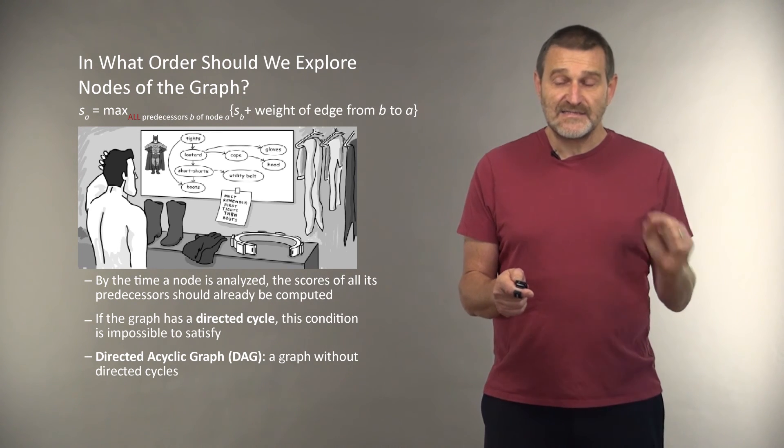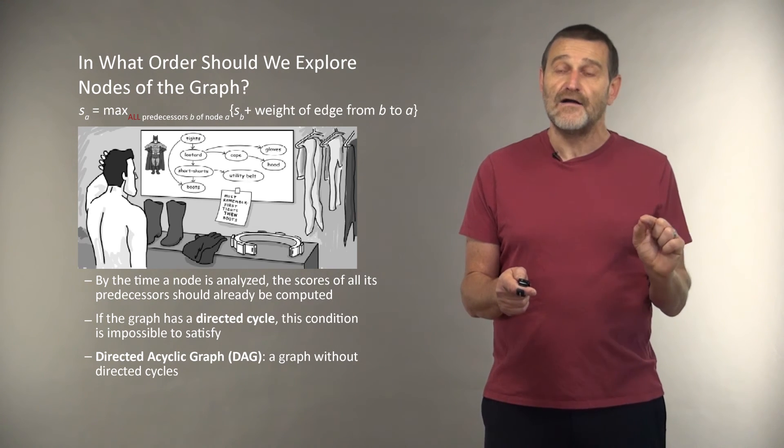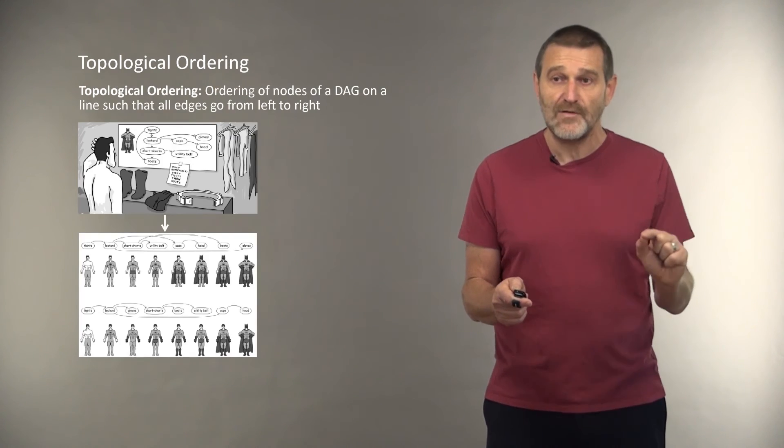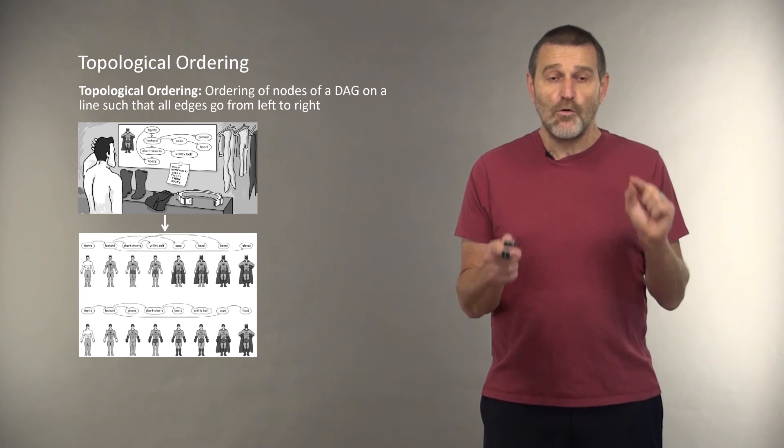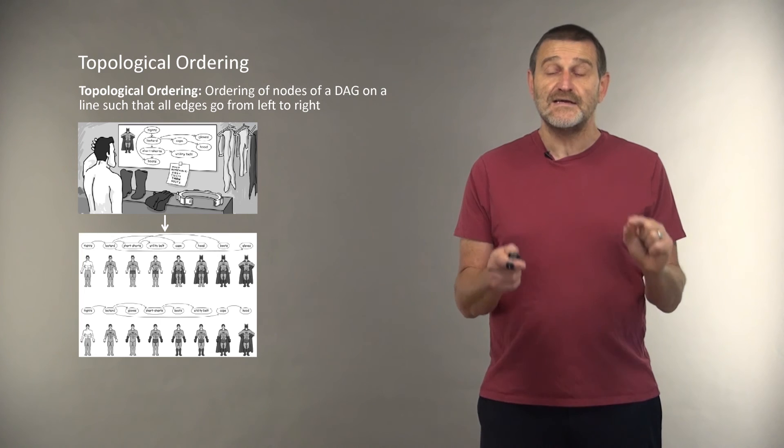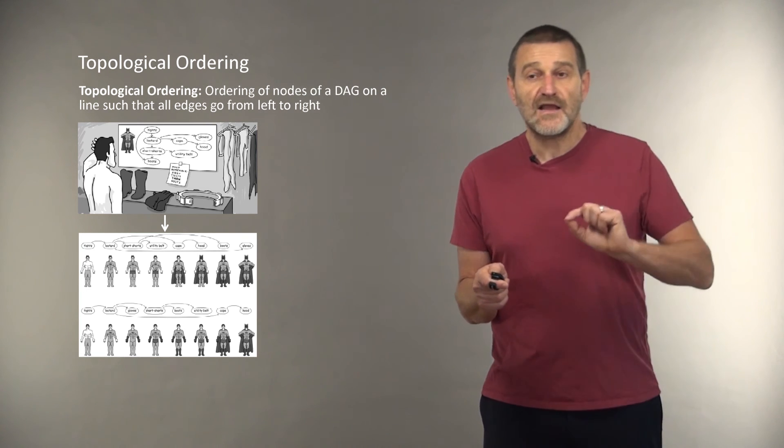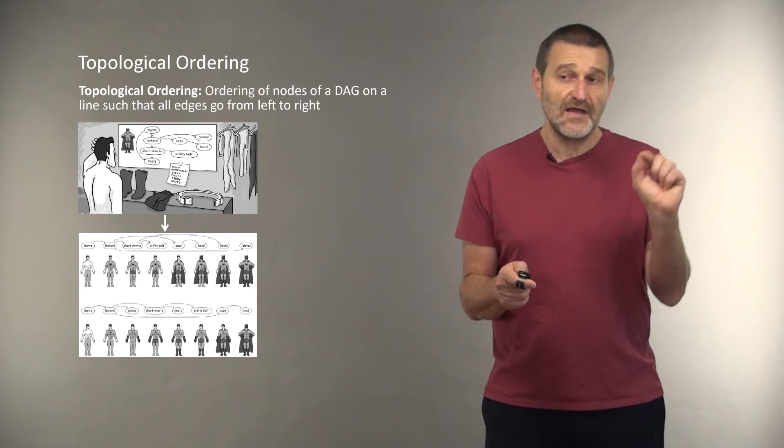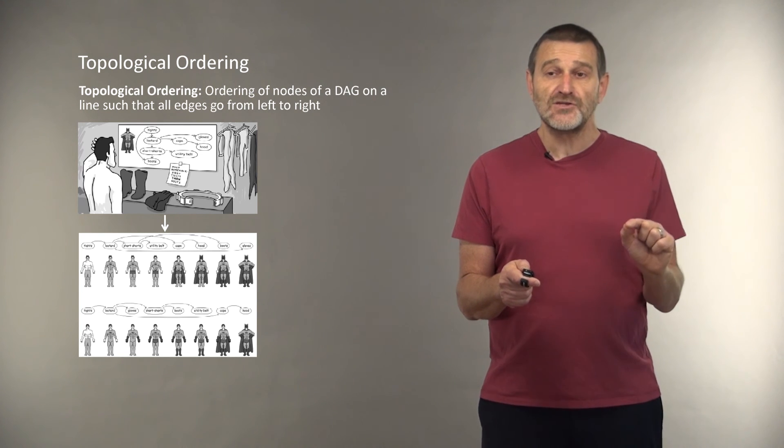In this slide, Batman is looking at a directed acyclic graph and is trying to solve a difficult dressing in the morning problem. And topological ordering of a graph is ordering of nodes of the DAG on a line such that all edges in the graph go from left to right. There are different ways for this Batman to get dressed in the morning, and two of them are shown here, and each of them represents a topological ordering.